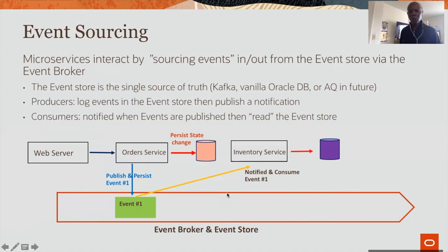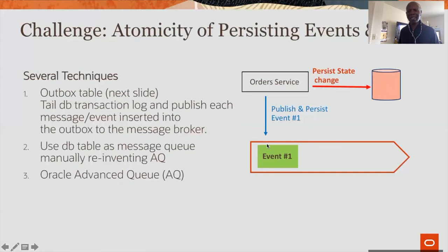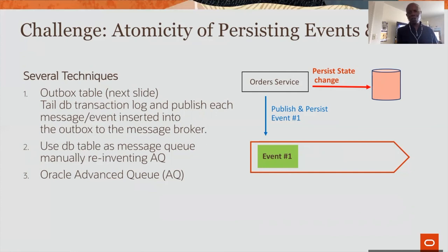What is the problem? The problem is I need to persist my changes to the database and I also need to persist my changes to the event store, and I want both things to be one single atomic local transaction. That is the challenge. One solution is something known as an outbox table. In one sentence: you have a process which will tail the transaction log, and whenever there is a new transaction, you publish an event to the event store.